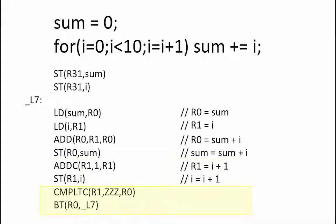Finally, we need to determine whether the loop needs to be repeated or we are done. This is done by checking whether i is less than 10. The beta provides the compare less than constant operation to do just that. Since R1 holds the latest value of i, comparing R1 to the constant 10 will produce the result we want in R0. So ZZZ equals 10. If the comparison is true, then we need to repeat the loop so we branch back to underscore L7. If not, we proceed to the instruction after the branch.